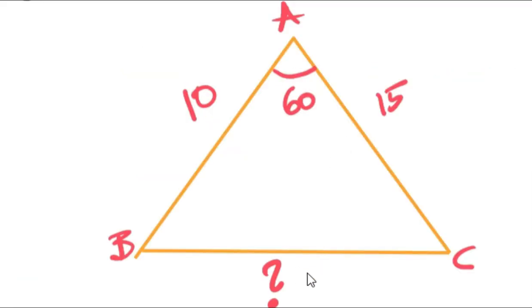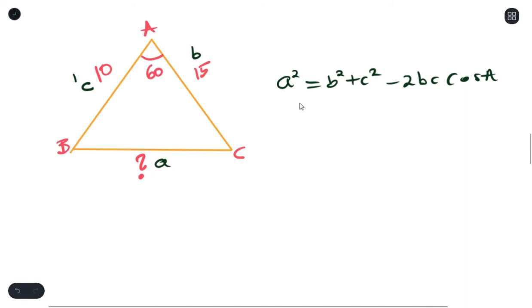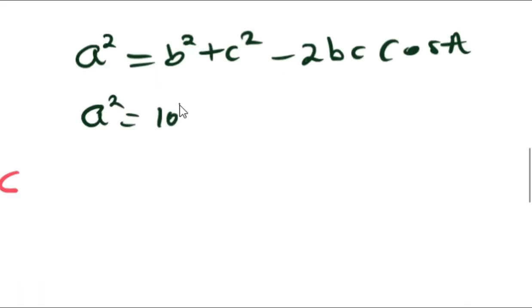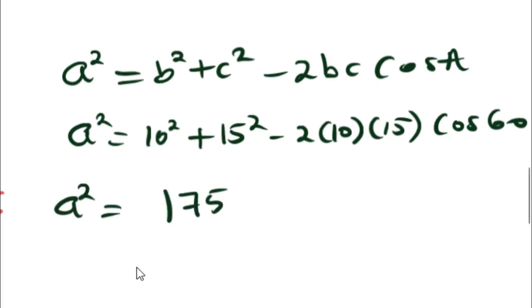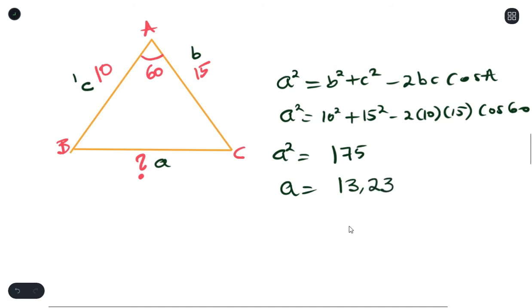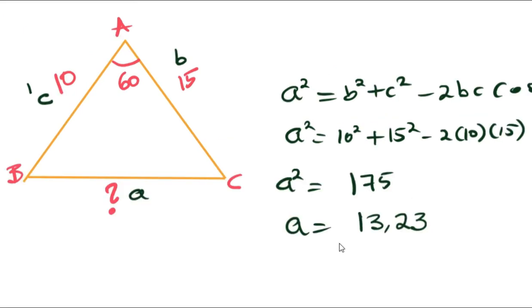So think about it. This here is your A, that is your B, and that there is your C. So substitute each and every one of them into your formula. So the length of the side A would be 13.23. And that's exactly how you can use cosine rule to answer questions.